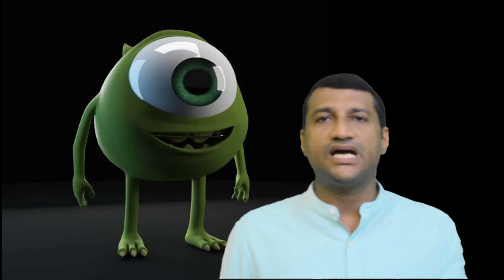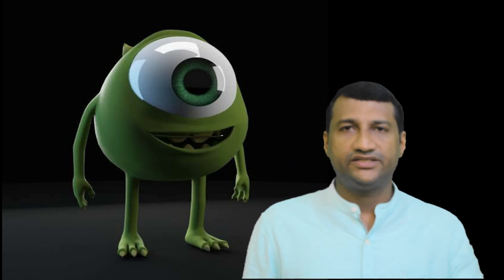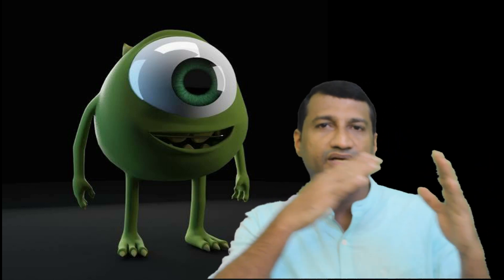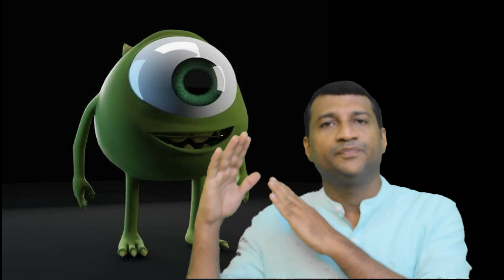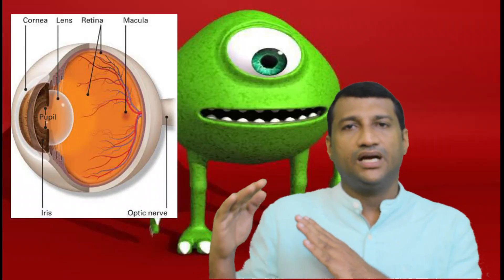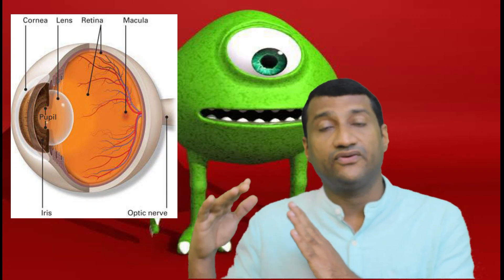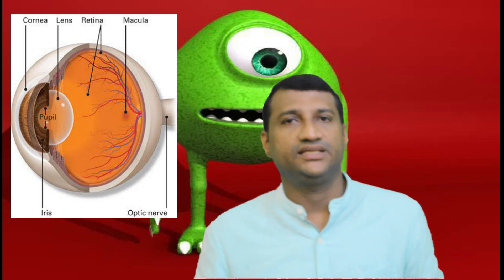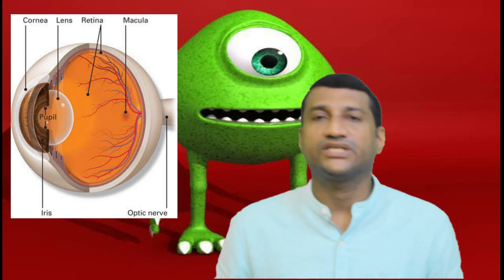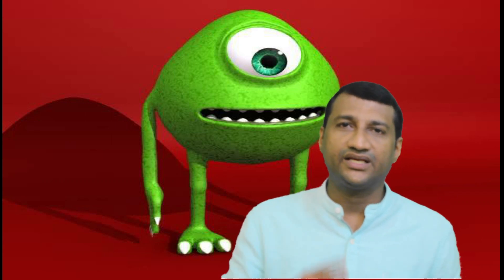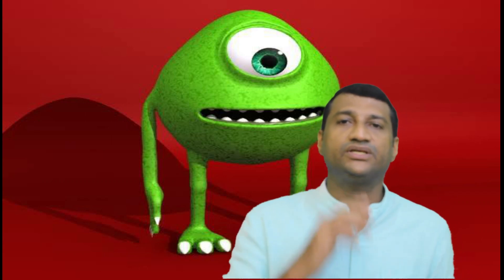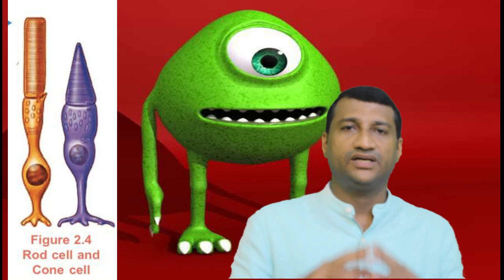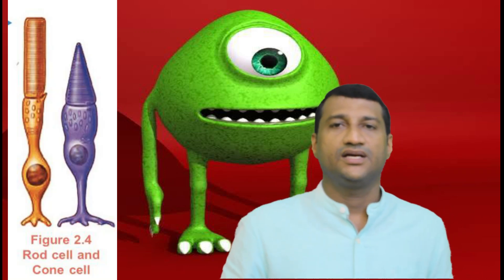Now we discuss retina and photoreceptors. The retina is where the image is formed — the image falls on the retina. This includes the photoreceptors.